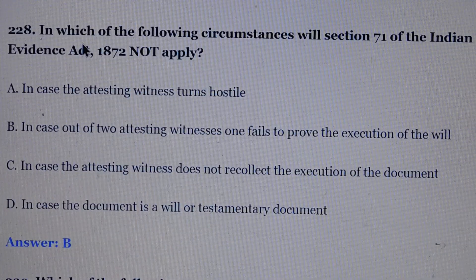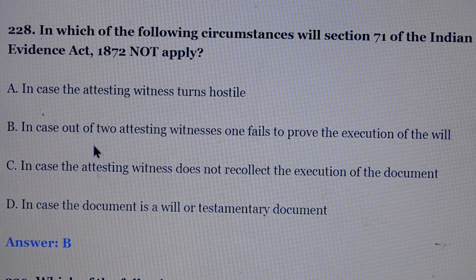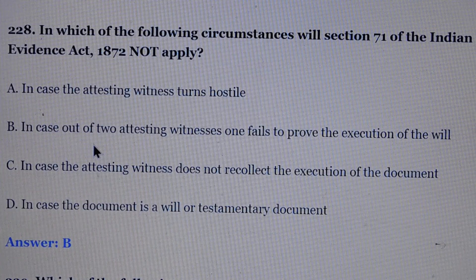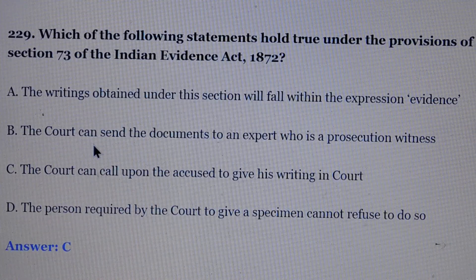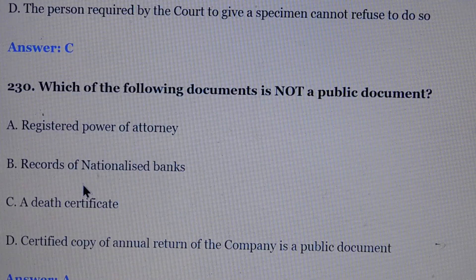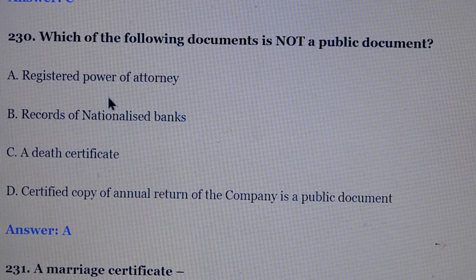Question number 228: In which of the following circumstances does section 71 of the Evidence Act not apply? Answer is option number B — in cases where out of two attesting witnesses, one fails to prove the execution of the will. Question number 229: Which of the following statements holds true under the provisions of section 73 of the Evidence Act? Answer is option number B — the court can call upon the accused to give his writing in court. Question number 230: Which of the following documents is not a public document? Answer is option number B, registered power of attorney.